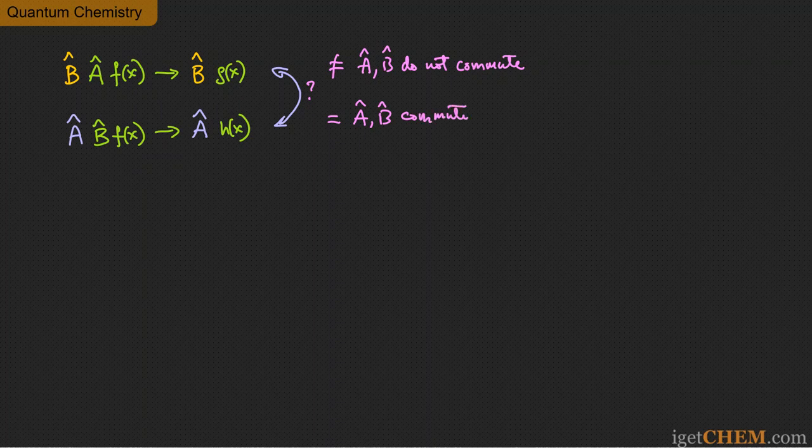The reason commutation is important in quantum mechanics is that every measurement you can make on a quantum mechanical system can be represented by an operator. If you can make two different measurements simultaneously on the same system, then the operators representing those two measurements must commute. If two measurement operators do not commute, quantum mechanics tells you that you cannot simultaneously make those two measurements — it's quantum mechanically impossible.